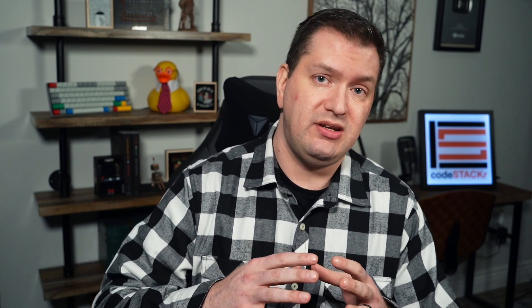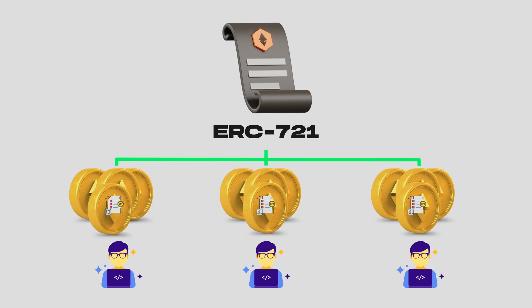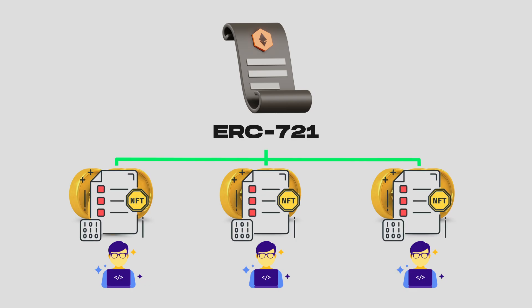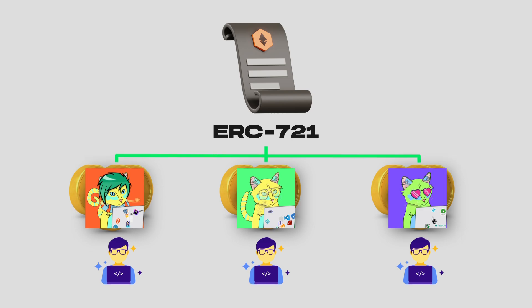ERC-721 contracts are similar to ERC-20 contracts. You can still generate as many tokens as you want and distribute these, and you can own multiple tokens. The difference, though, is that ERC-721 tokens have extra functions and contain metadata — these are called smart contracts. Because of this, each token can have unique properties, making each token unique, and you can't exchange one token for another because none are exactly the same.